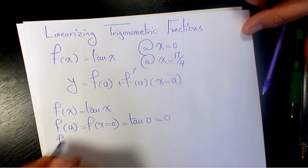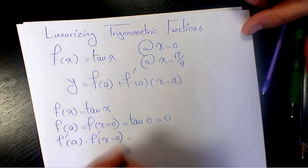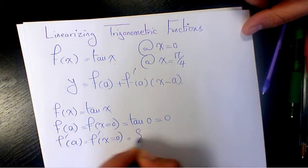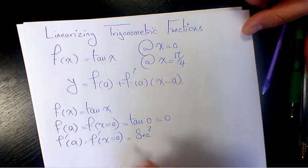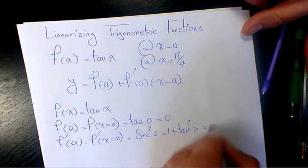And f prime of a is going to be f prime when x equals zero. That's going to be secant squared 0, or you can say 1 plus tan squared 0, which equals 1.